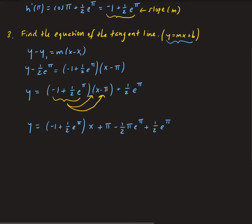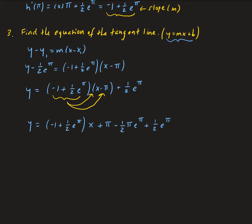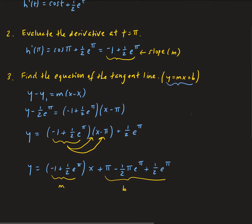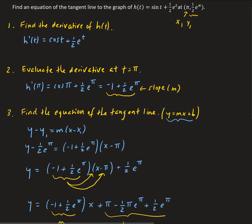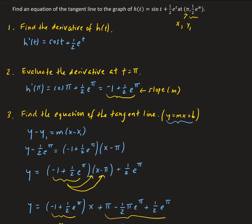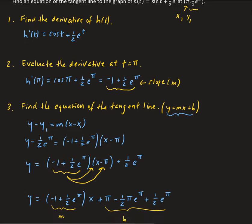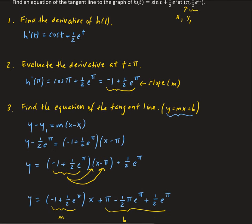So now we have our final form. This is our solution — the slope m is minus one plus one-half e to the pi, and b, the y-intercept, is pi minus one-half pi e to the pi plus one-half e to the pi. That is the equation of the tangent line to the graph of h at x equals pi.